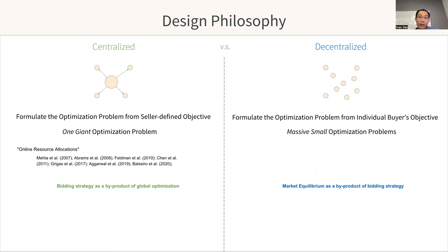On the other hand, in a decentralized design, we formulate the optimization problem from each individual advertiser's objective. This results in massive small optimization problems. The market equilibrium and the global metrics on the utilities we talked about are then a byproduct of each individual bidding strategy.